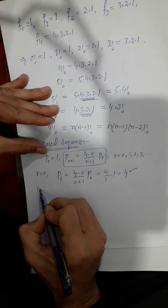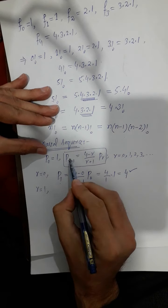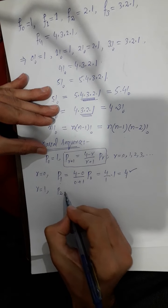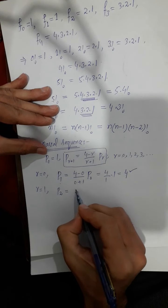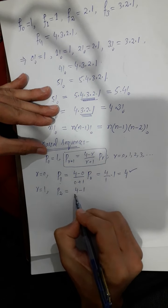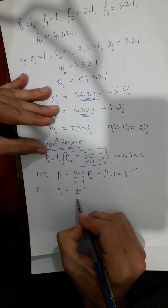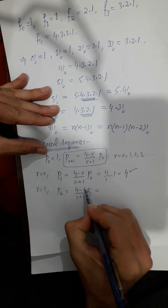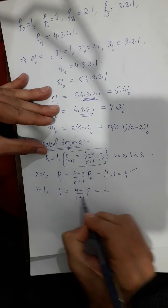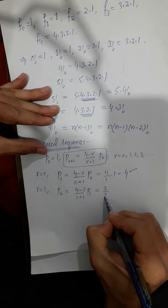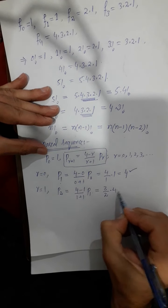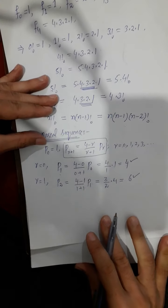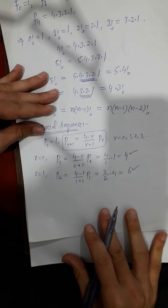For R equals to 1, we get P2 equals (4 minus 1) divided by (1 plus 1) times P1. That gives 3 over 2, and substituting P1 equals 4, we simplify to get the third term of the sequence: P2 equals 6.